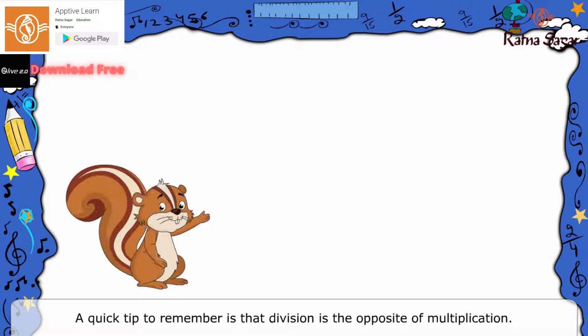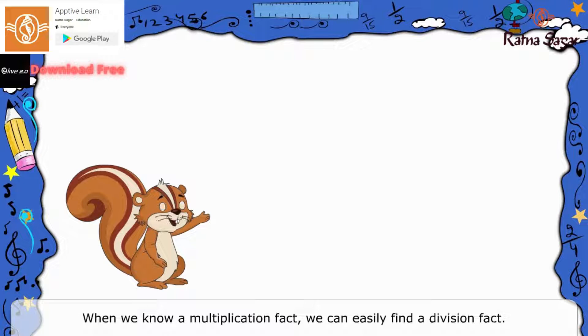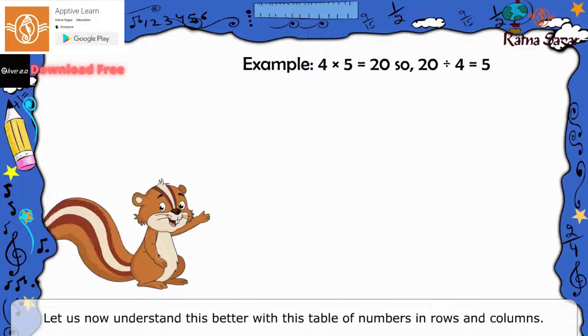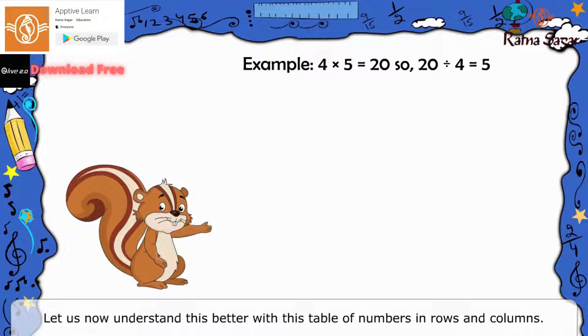A quick tip to remember is that division is the opposite of multiplication. When we know a multiplication fact, we can easily find a division fact. For example, 4 into 5 is equal to 20. So, 20 divided by 4 is equal to 5. Let us now understand this better with this table of numbers in rows and columns.